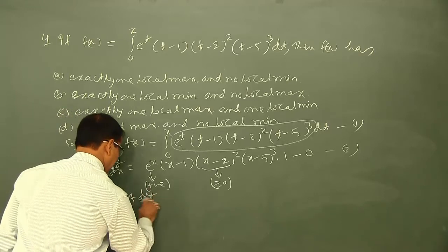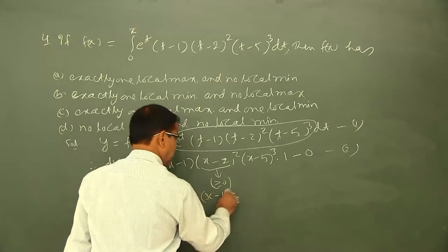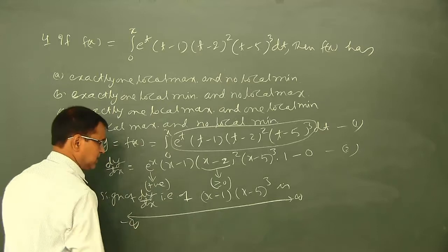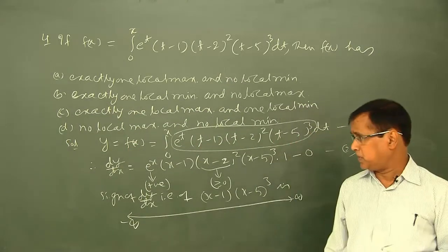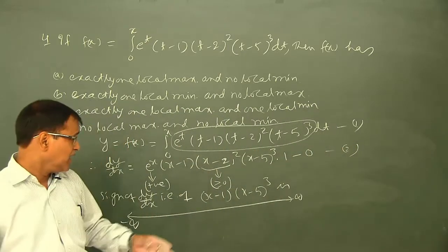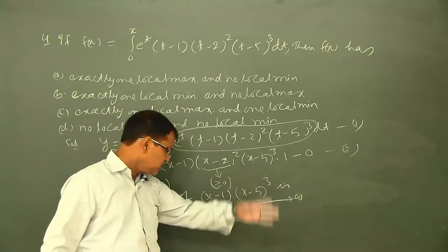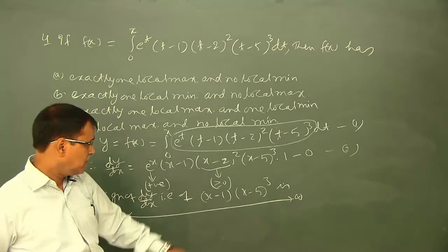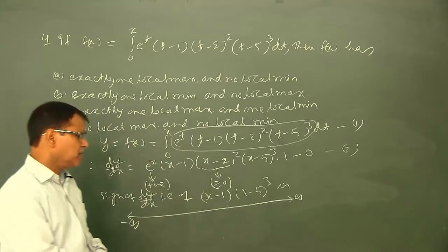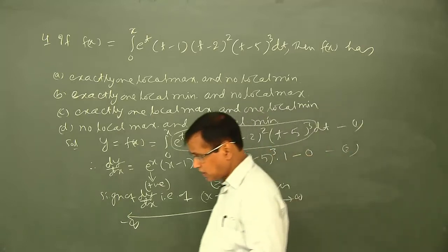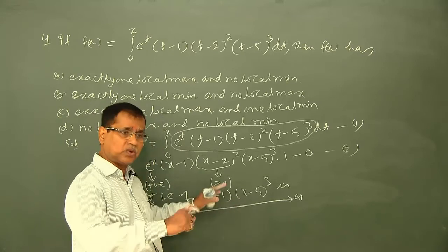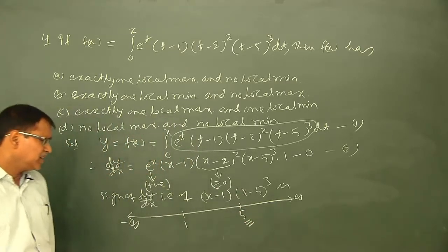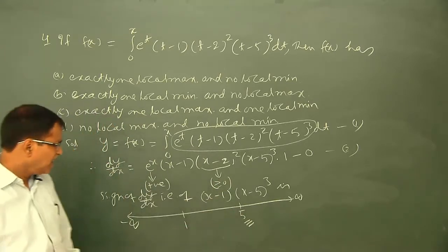To write the sign scheme of (x−1)(x−5)³: set numerator to zero — x = 1 from (x−1), and x = 5 from (x−5)³. Note x = 5 is repeated three times (odd number of times), so the sign alternates on both sides of 5. Mark critical points: x = 1 and x = 5 (repeated 3 times, odd). Since odd repetition, sign changes alternately across both points.